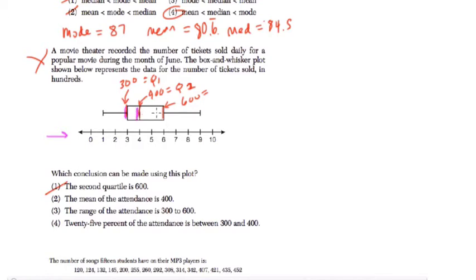This is the median. This is the third quartile, or the upper quartile. Here's our maximum number right here, and here's our minimum number.